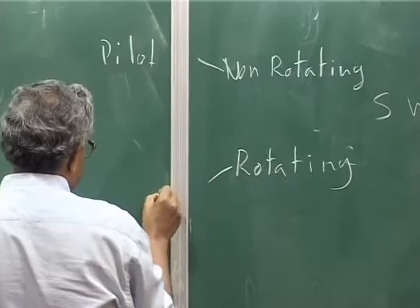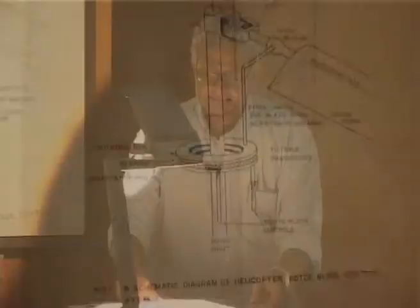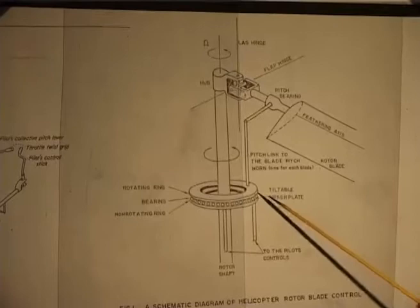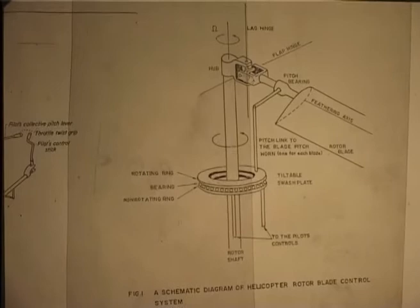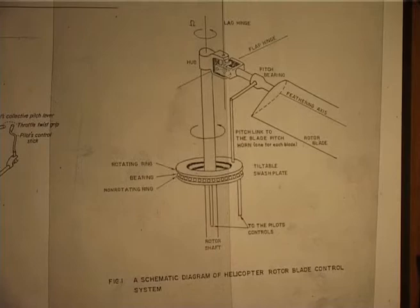So the swash plate mechanism has two parts, and schematically it will be like this — that is very simplistic. Please understand, as a mechanical system this is a very beautiful thing, because people have thought about how to really design a mechanism through which you control from a non-rotating to a rotating system.